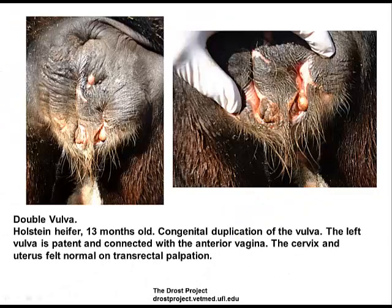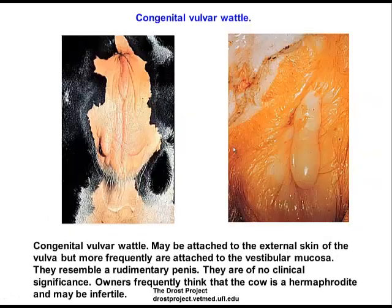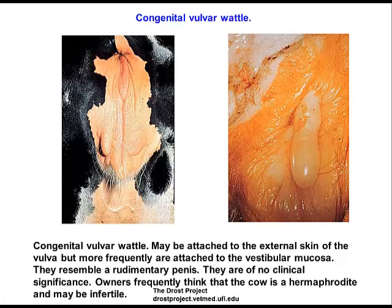This is an example of duplication of parts — in this case, duplication of the vulva, which is not very common. More commonly seen are congenital vulval wattles, which are finger-like projections occurring on the exterior surface of the vulva or near the mucocutaneous junction. They don't really affect fertility at all, though property owners may think the heifer will be infertile if it has one.